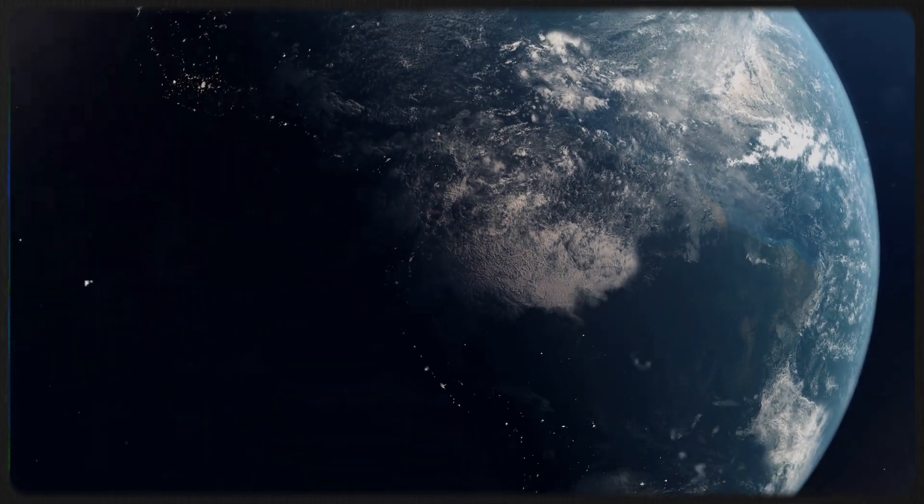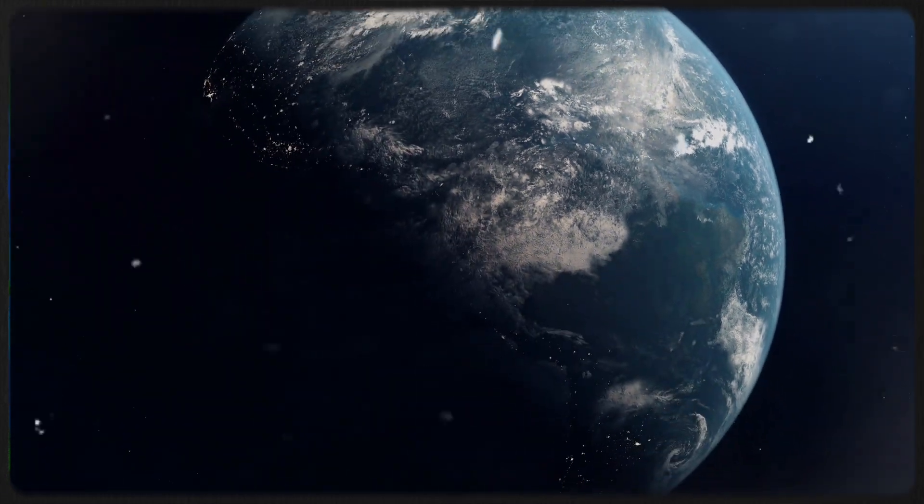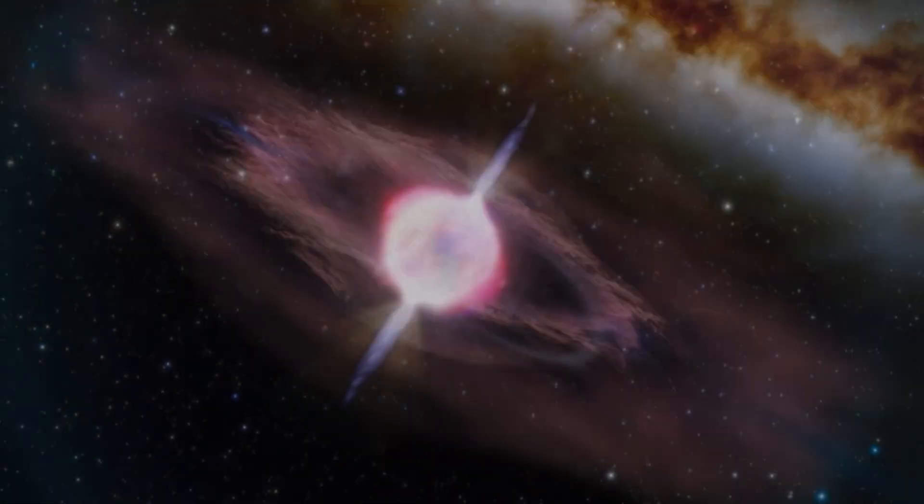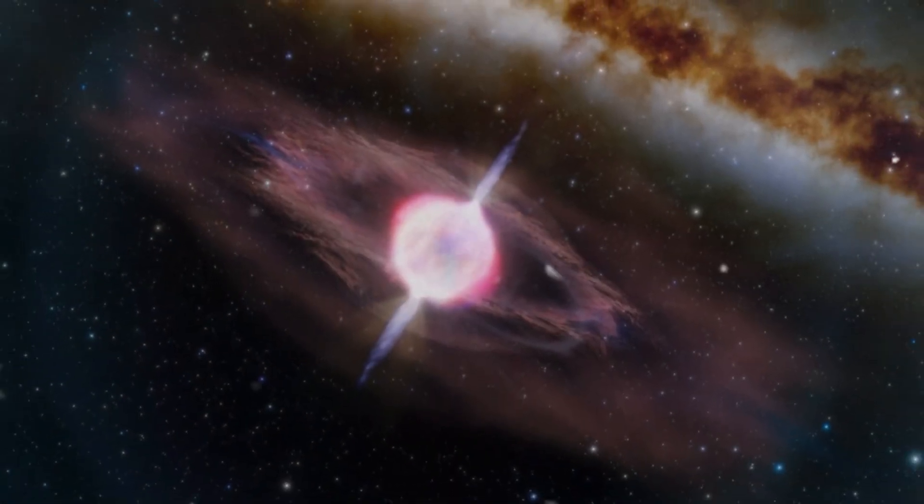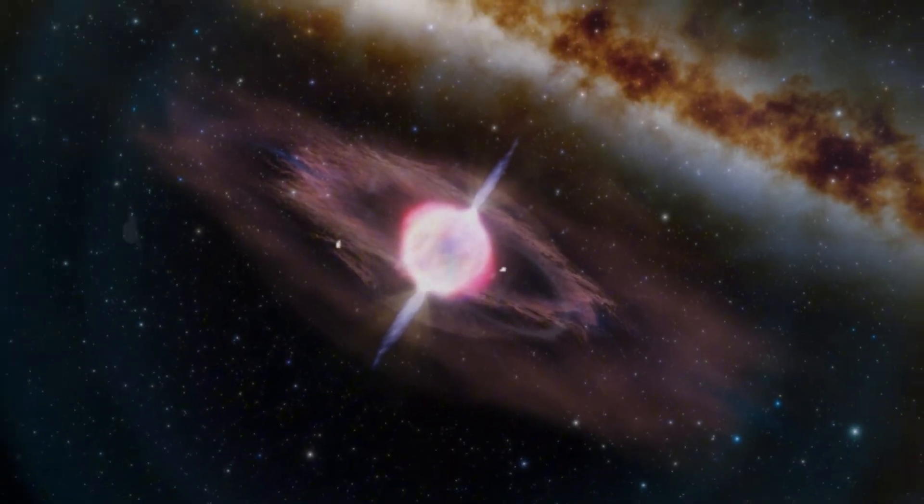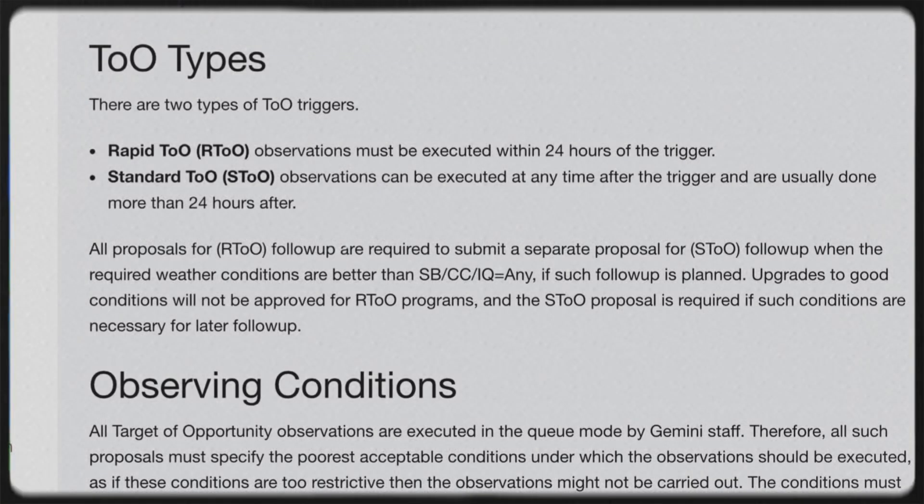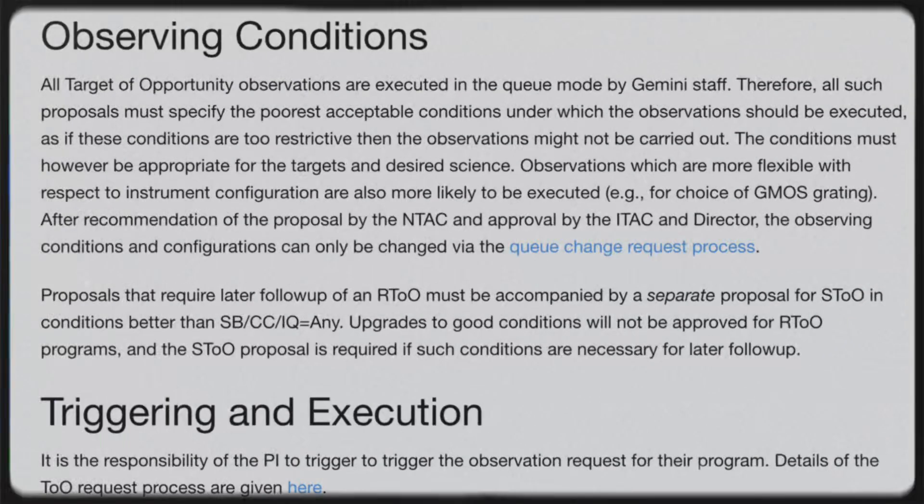But space doesn't always operate on a schedule. Some of the most dramatic and fleeting events in the cosmos, like gamma-ray bursts or supernovae, don't come with a calendar invite. They strike without warning. That's where the concept of a target of opportunity comes in. It's a special type of observation, one that researchers prepare in advance.